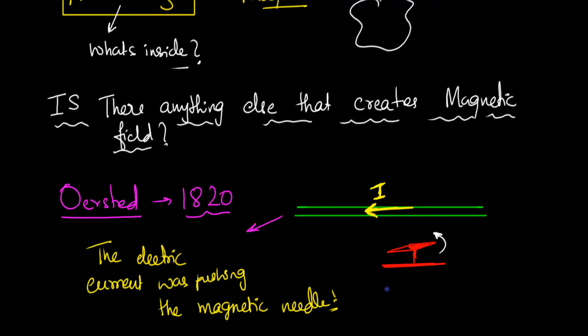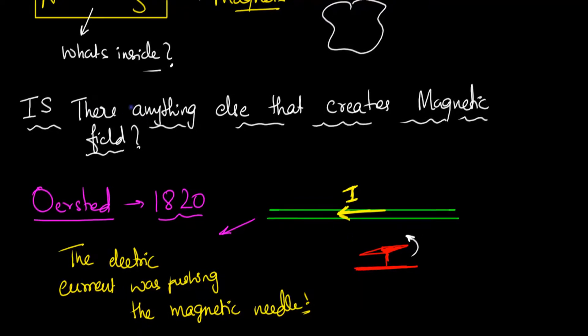So the question, is there anything else that creates a magnetic field was answered by this fellow and the answer is yes, there is something else that also creates a magnetic field. And what is that something? An electric current.